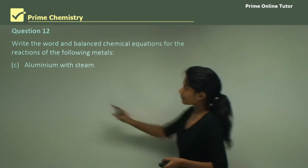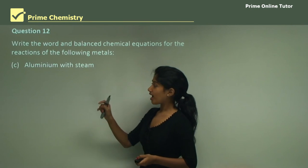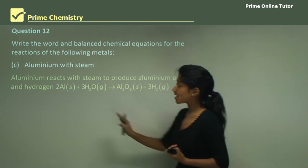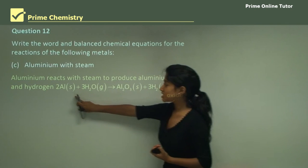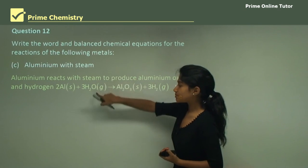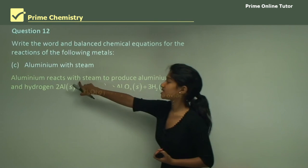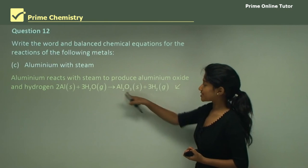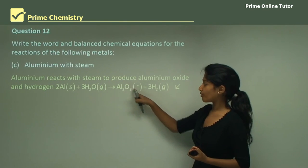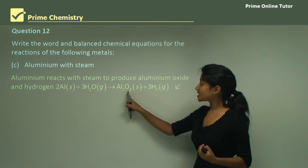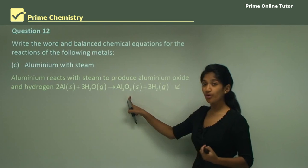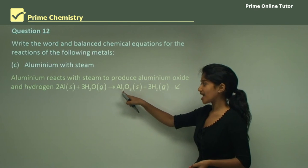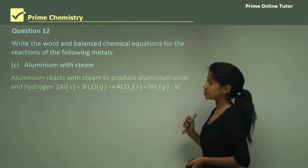Part C: aluminium with steam. Aluminium reacts with steam to produce aluminium oxide and hydrogen. When reacting with steam it always produces an oxide. We write aluminium reacting with water in gaseous form — remember to indicate G for steam. It produces aluminium oxide Al2O3 because aluminium from group three has a valency of plus three and oxygen from group six has a valency of minus two — crossing over gives Al2O3 — plus hydrogen gas.